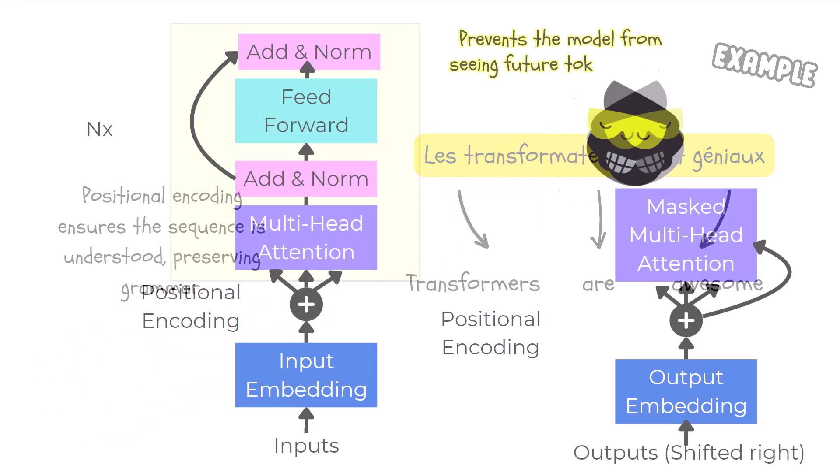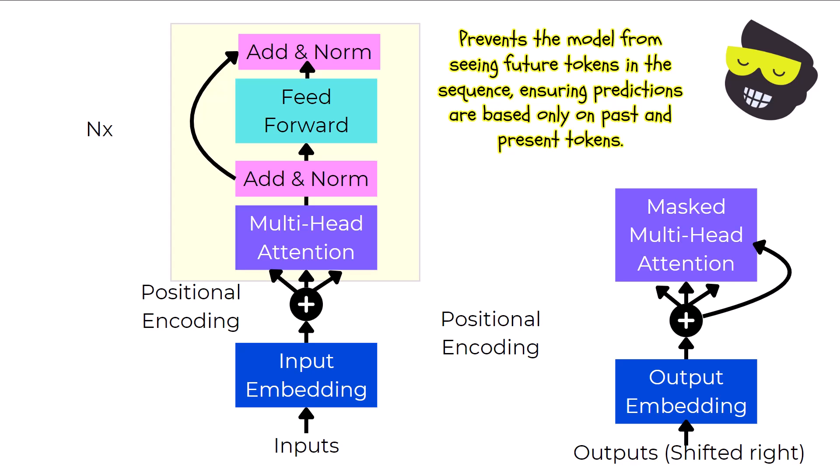This mechanism is slightly different from the regular multi-head attention used in the encoder. The masked part means that when the model is generating an output, it can't see the future tokens in the sequence. It only attends to the tokens that have already been processed. This is crucial for tasks like language translation or text generation, where the model needs to predict the next word based on the previous ones without knowing the future words. The mask ensures that the model only uses past and present information, not future data that it hasn't generated yet. And this helps maintain the sequence natural flow and prevents the model from cheating by looking ahead.